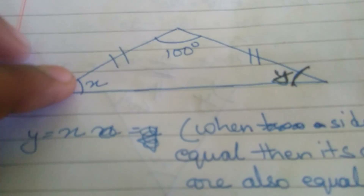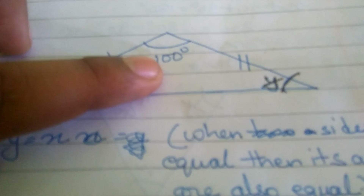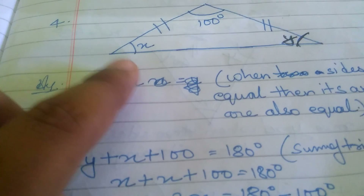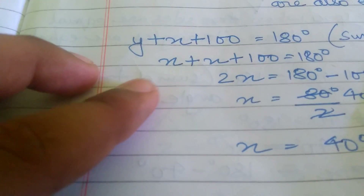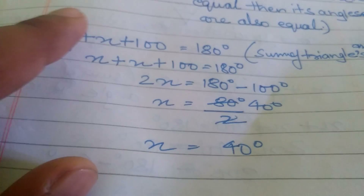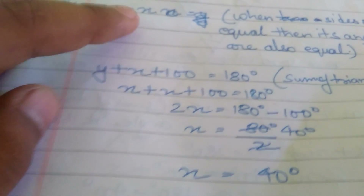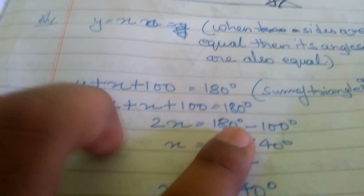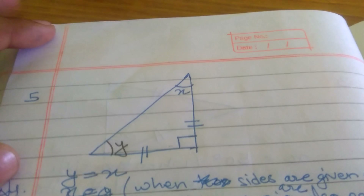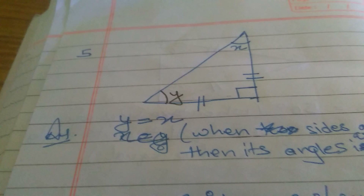This is the fourth question. X and 100 are given, and this side and this side are equal. I have taken Y as additional. Y is equal to X because when two lines are given equal, their angles are also equal. So Y plus X plus 100 equals 180, and substituting Y equals X gives X plus X plus 100 equals 180 degrees. We will then solve for X.